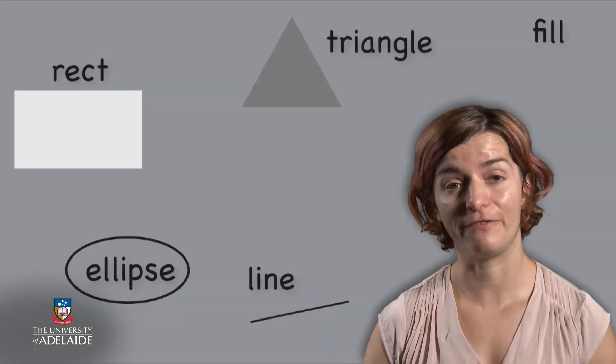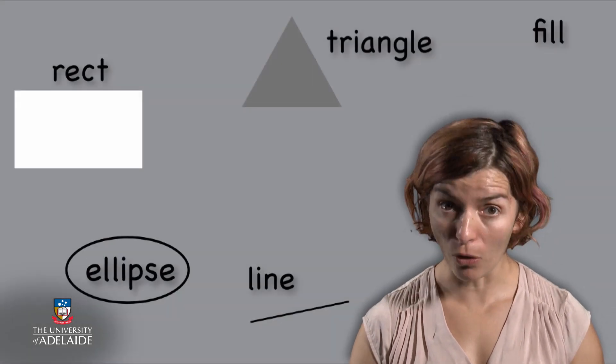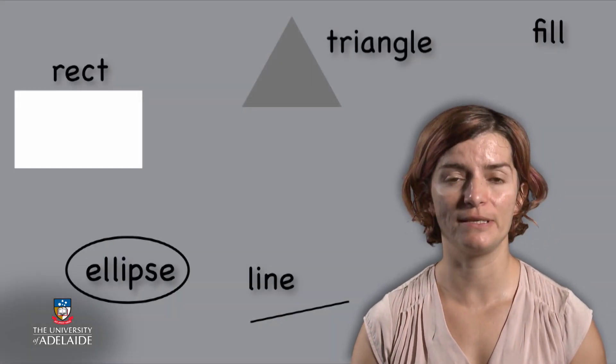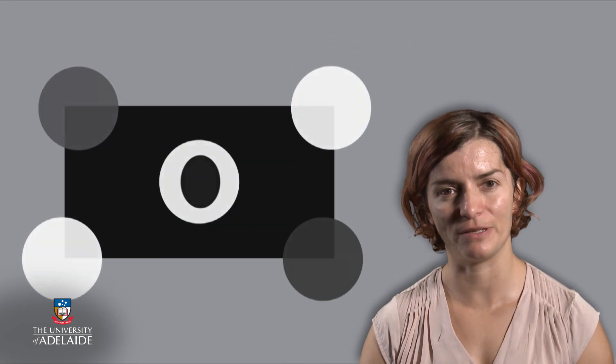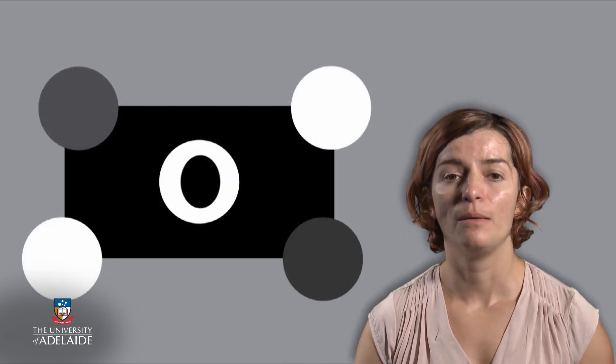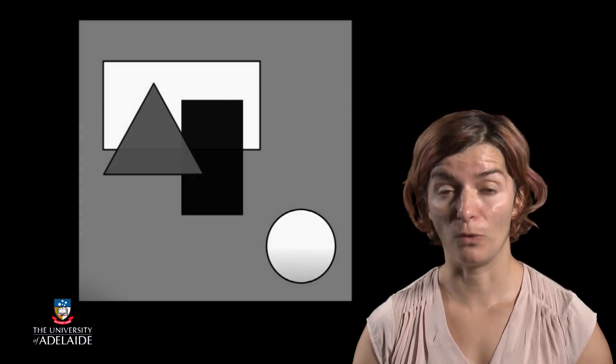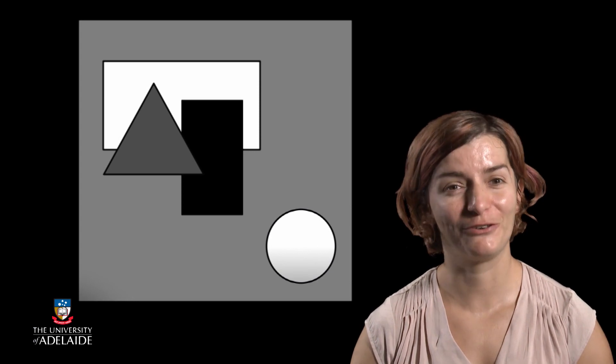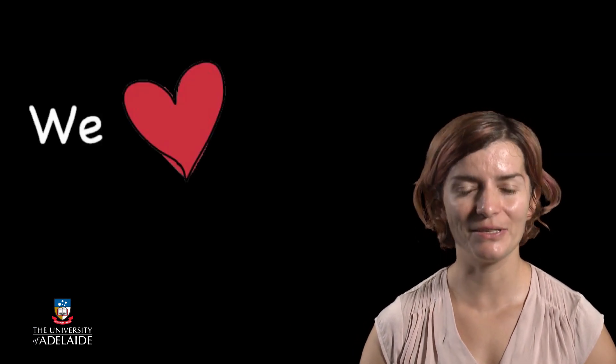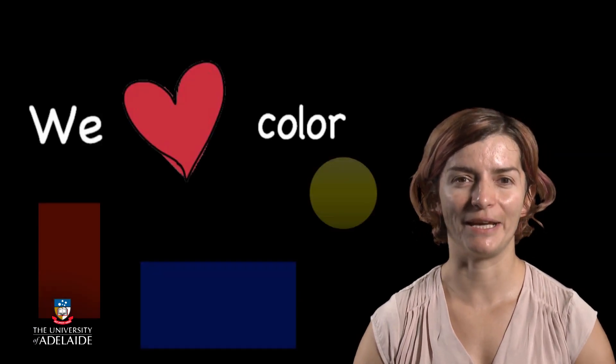Welcome back to Think Create Code. So far, we've learned about processing functions, the order of instructions, and how to build more complicated images. But we're starting to get a bit bored by the black, gray, and white colors — we want to add a bit more color to our lives. This is what we will do today.